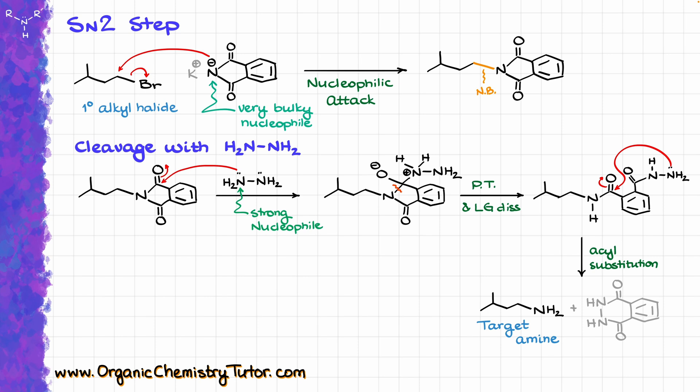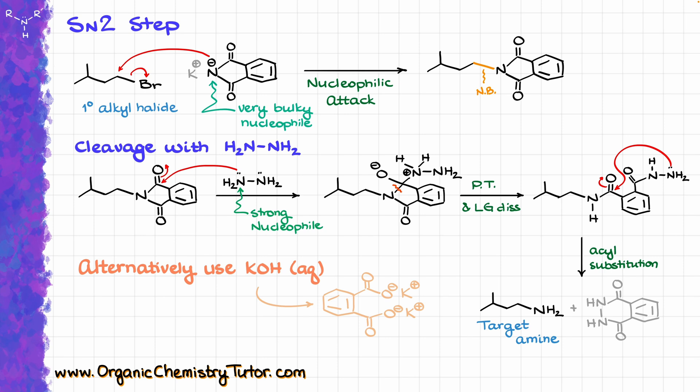The alternative cleavage method you'll see in class involves potassium hydroxide. That is essentially a basic hydrolysis of our amide, which gives the potassium salt of phthalic acid — which is water-soluble, so it might be a little bit easier to remove. However, cleavage with potassium hydroxide actually requires quite harsh conditions and often yields very poor results with a lot of side reactions.